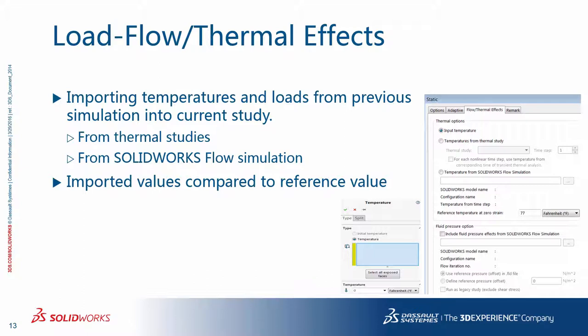You can include flow and thermal effects as loads. This brings you to the flow and thermal effects tab of the study properties dialog box, which allows you to import temperatures and loads from previous simulations. When using the input temperature option, make sure to specify temperatures on components or shells. Specifying temperatures only on the boundary may not be practical since a temperature of zero is assumed at all other locations. If you define temperature on boundary only, you may need to create and solve a thermal study first to compute temperatures at all nodes. The temperature distribution can come from another thermal study within SOLIDWORKS simulation or from SOLIDWORKS flow simulation. You also input a reference temperature at zero strain in the model. Similarly, you can import fluid pressure loads from SOLIDWORKS flow simulation results file.